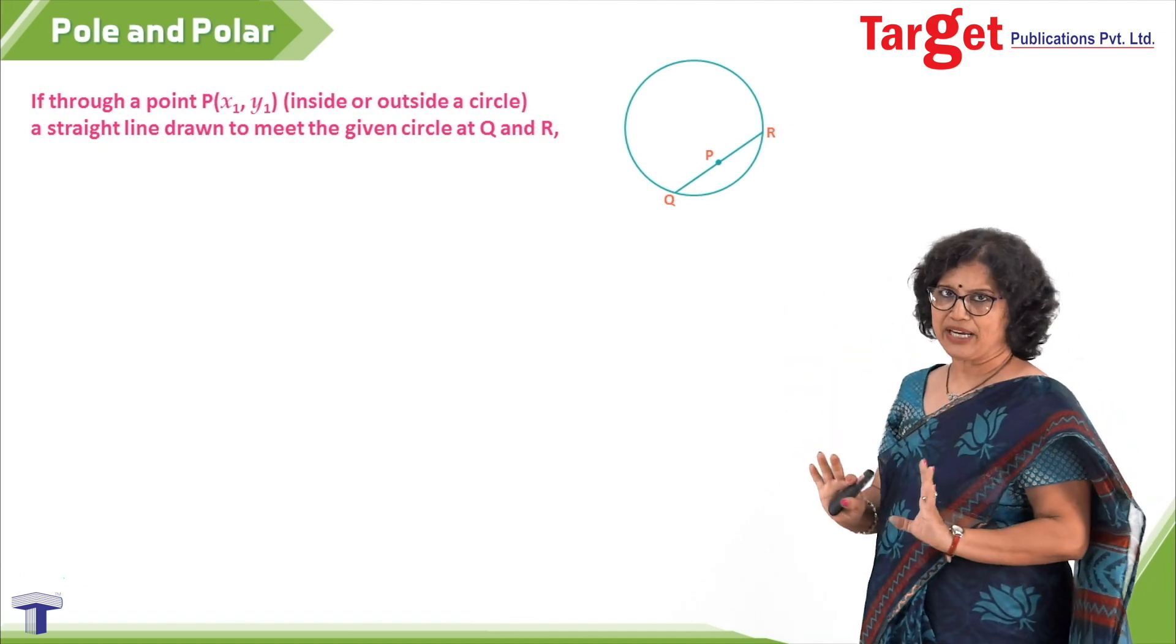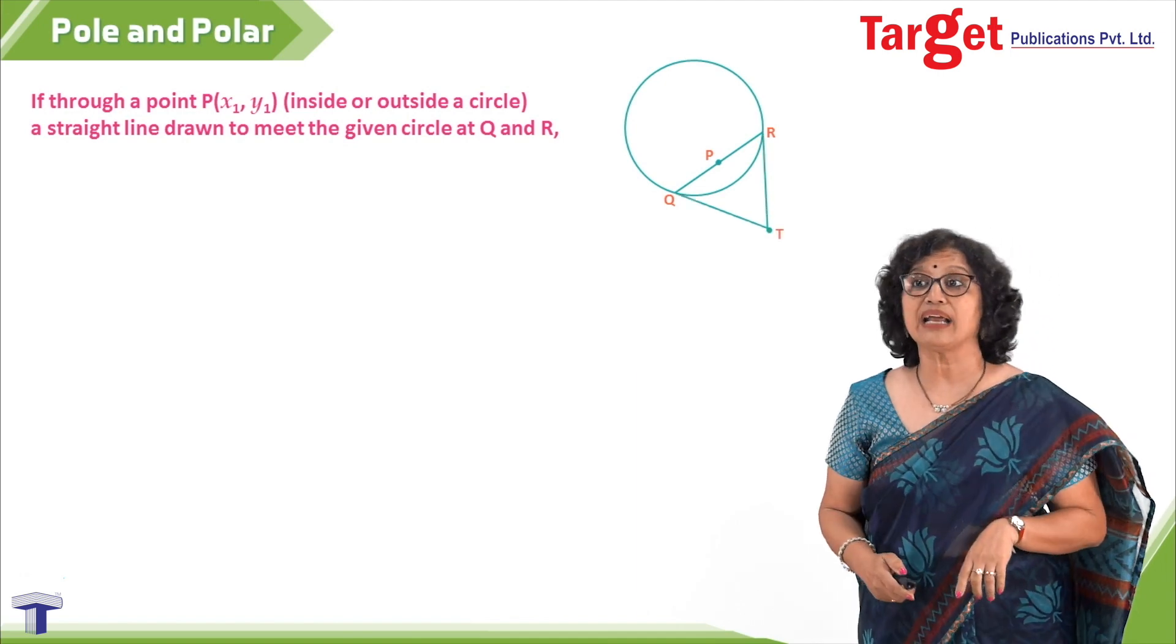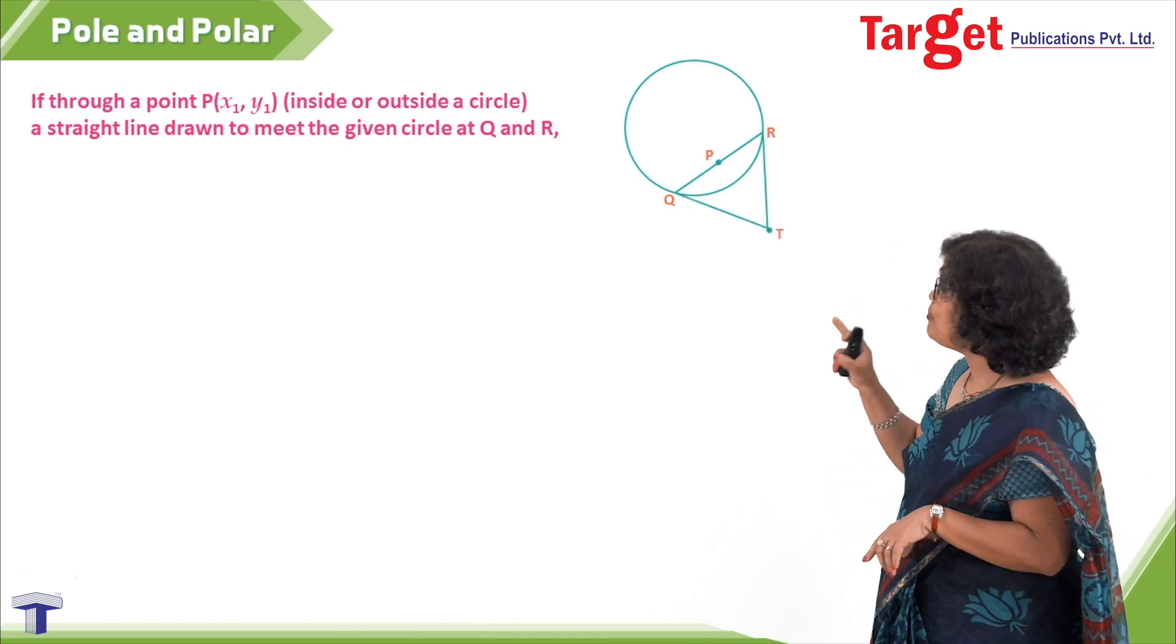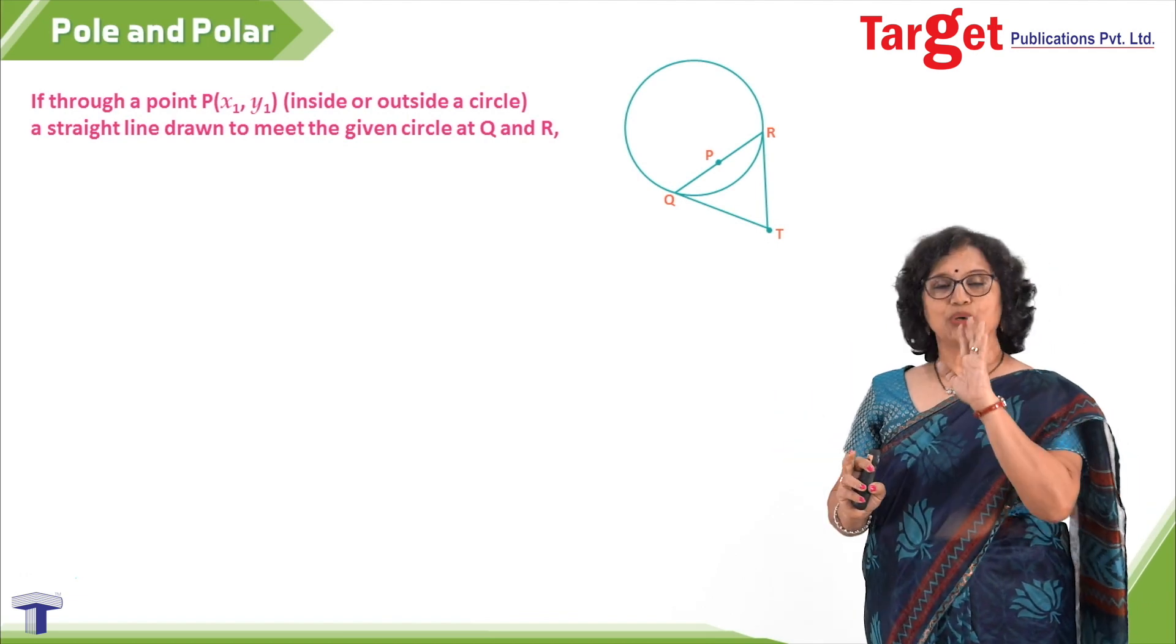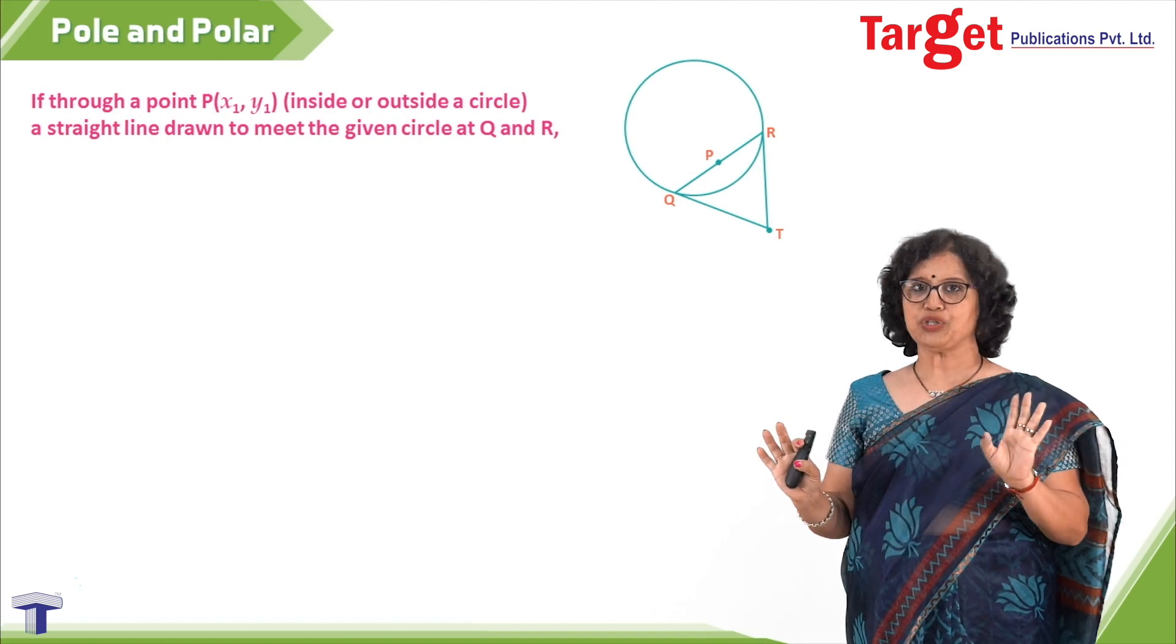What we do further is that at ends Q and R, I draw tangents and they meet at point T. The question is that Q and R, the way I have shown in the picture, is not the only position. Positions Q and R are varying positions.